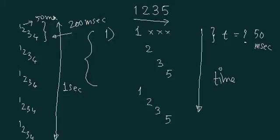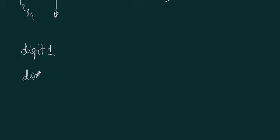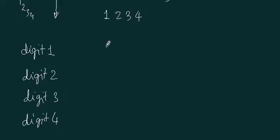Everybody understanding this? And thereby slowly the data will be changing and like that. So, we can understand this by drawing a diagram. I simply write down digit 1, then digit 2, digit 3 and digit 4. We may count the digits from anywhere, from left to right or right to left. Right now, for simplicity, I count from left to right. So, this is digit 1, digit 2, digit 3 and digit 4. The values are also 1, 2, 3, 4.